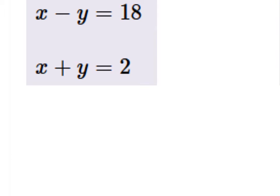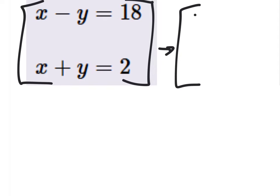Let's do this one using a matrix. So the first thing we need is our augmented matrix. We can put this in our brackets like this. That gives us the matrix 1, negative 1, 18, 1, 1, and 2.